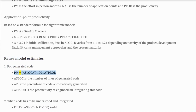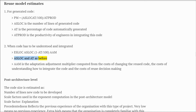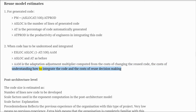Reuse model estimates: for generated code, PM = (ASLOC × AT) / (100 × ATPROD), where ASLOC is the number of lines of generated code, AT is the percentage of code automatically generated, and ATPROD is the productivity of engineers integrating this code. When code has to be understood and integrated: PM = ASLOC × (1 - AT/100) × AAM, where AAM is the adaptation adjustment multiplier computed from the costs of changing reused code, understanding how to integrate the code, and reuse decision-making.